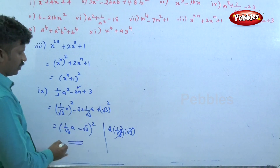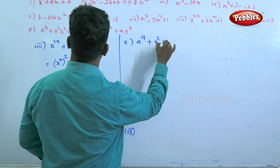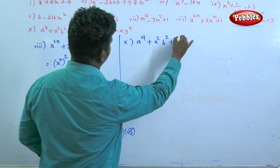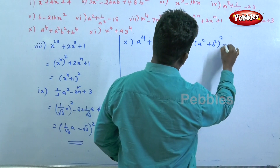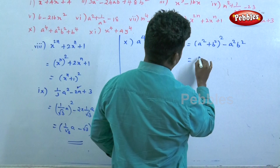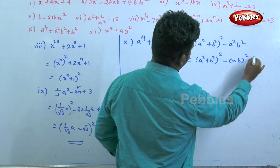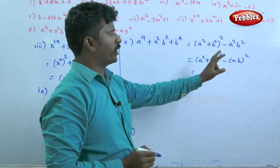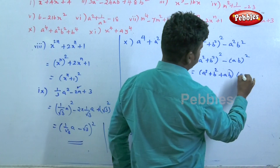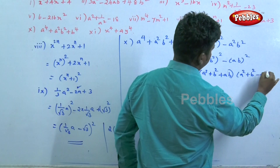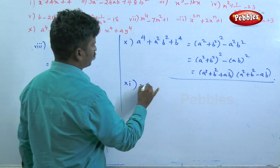Question number ten: a to the power 4 plus a squared b squared plus b to the power 4. This can be written as a squared plus b squared whole square minus a squared b squared, which equals a squared plus b squared whole square minus ab whole squared. This is the format of a squared minus b squared, giving a squared plus b squared plus ab into a squared plus b squared minus ab.